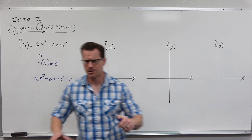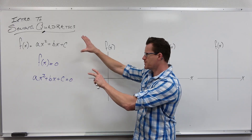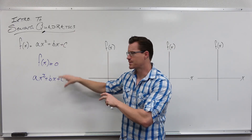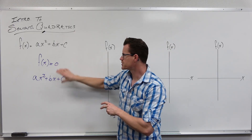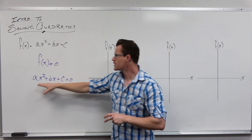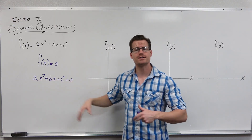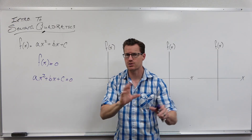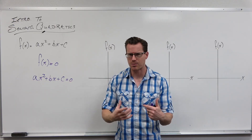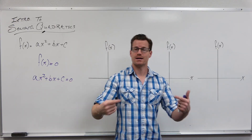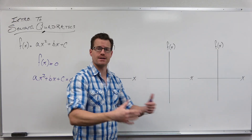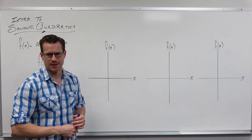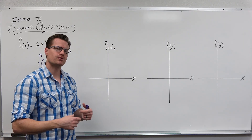The key idea is: when you set a function equal to zero, you are finding x-intercepts. All of the techniques we're about to unpack — everything you know about them — is finding zeros. Now, what can we actually get? Since a quadratic gives us a parabola, there are really only three cases as far as x-intercepts are concerned.